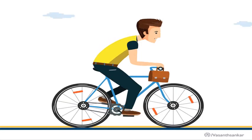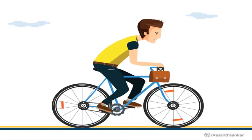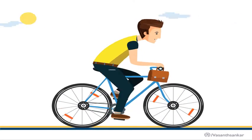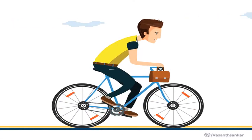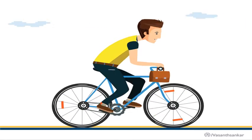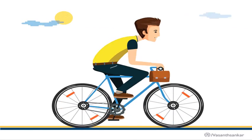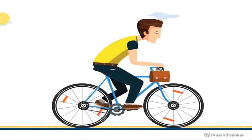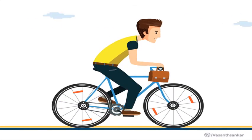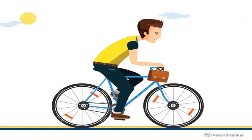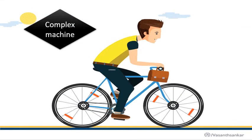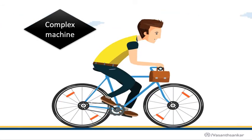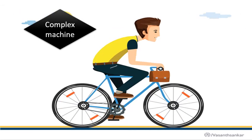Now we will learn about the very last topic in our chapter. A bicycle is in front of you — let's notice what kinds of simple machines are used in it. A bicycle has wheel and axle, plus there are many screws attaching different parts of the bicycle together. Since more than one simple machine is used, a bicycle is a complex machine.